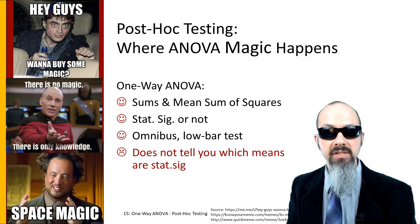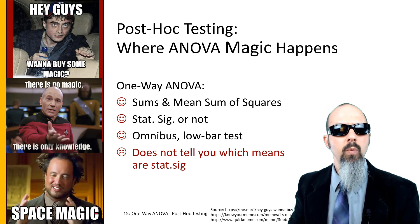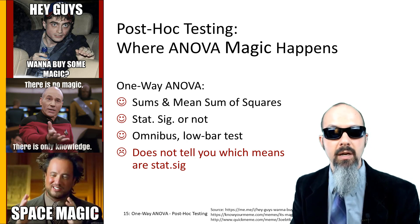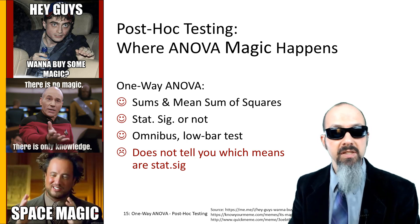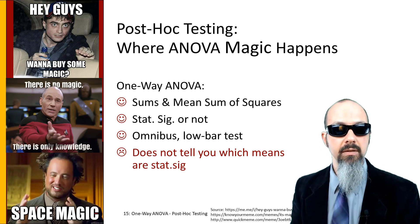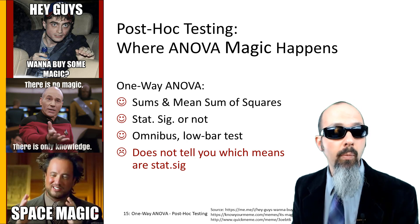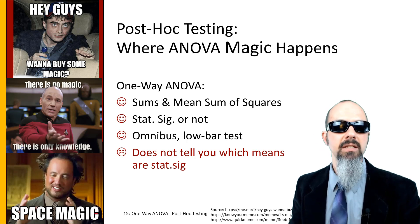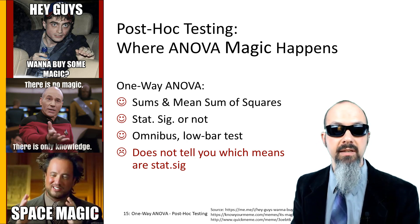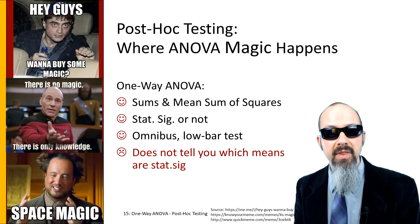With post hoc testing, this is where the real magic of the ANOVA starts to happen. When you're dealing with the one-way ANOVA, it gives you things like sums of squares and mean sums of squares. It can tell you if you're statistically significant or not. It's an omnibus test, which means it's wrapping up a bunch of pairwise tests all together. That omnibus has what I call a low bar, because all you need is one pairwise test to become statistically significant and the entire F-ratio and F-test become statistically significant as well.